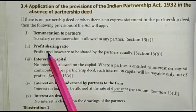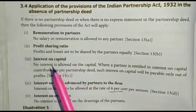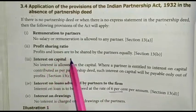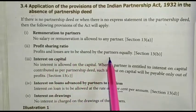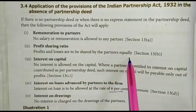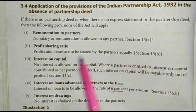Next one: profit sharing ratio. Profits and losses are to be shared by the partners equally under Section 13(b).